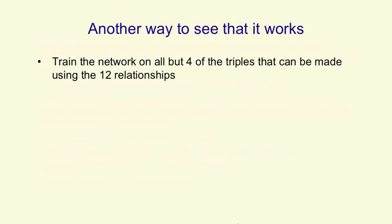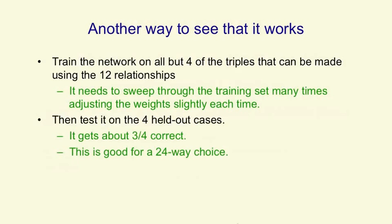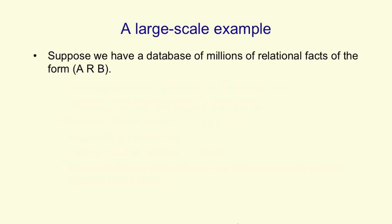Another way to see that the network works is to train it on all but a few of the triples and see if it can complete those correctly — does it generalize? There are 112 triples; I trained on 108 and tested on the remaining four, doing that several times. It got either two or three of those right, which is not bad for a 24-way choice. It makes mistakes, but it didn't have much training data — not enough to really nail down the regularities — yet it does much better than chance. If you train it on a much bigger dataset, it can generalize from a much smaller fraction of the data.